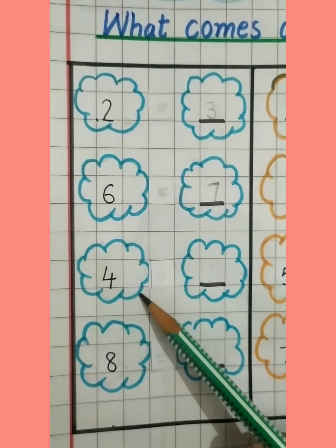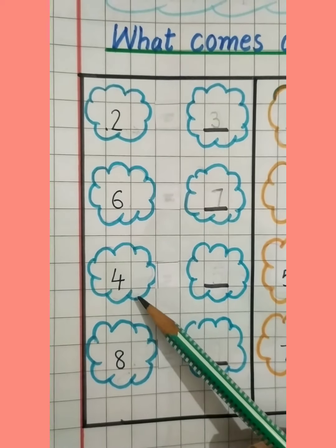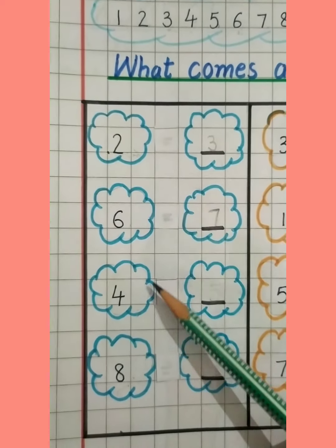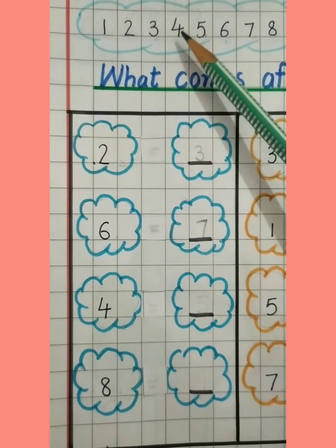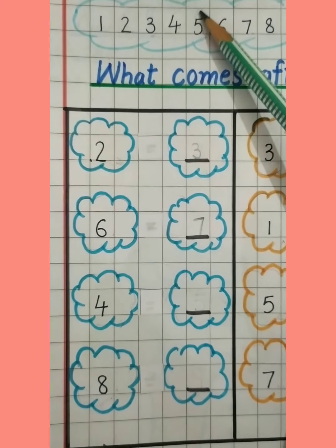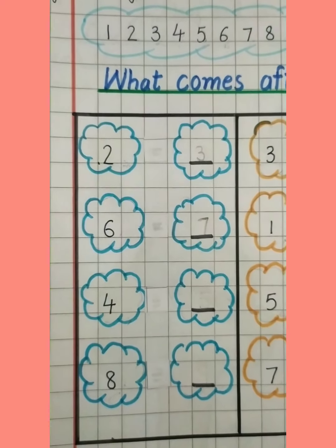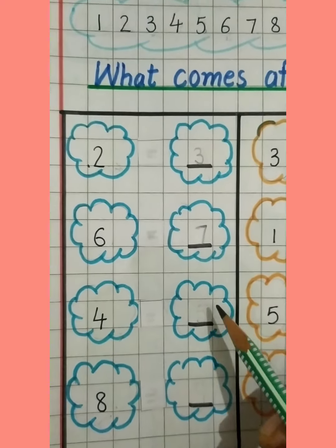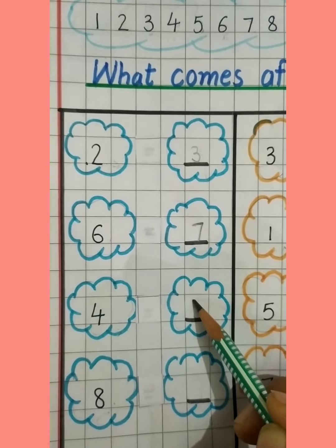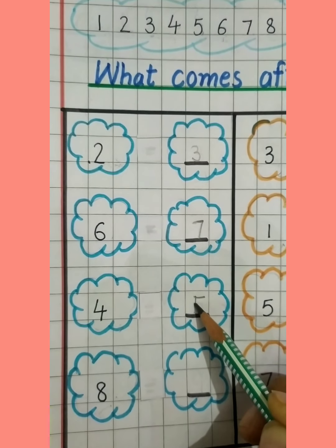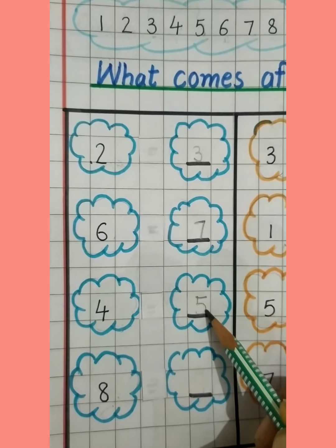This is number 4. And what comes after 4? 1, 2, 3, 4 — and after 4 is 5. So kaunsa number likhenge aap yahan par? After 4 is 5.